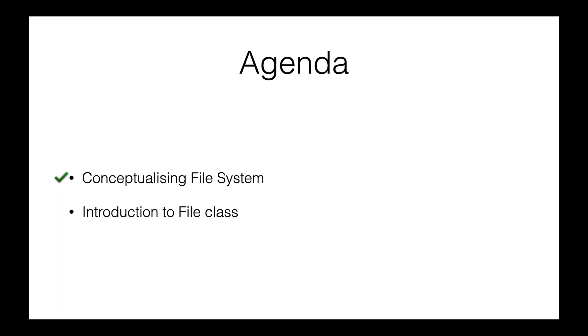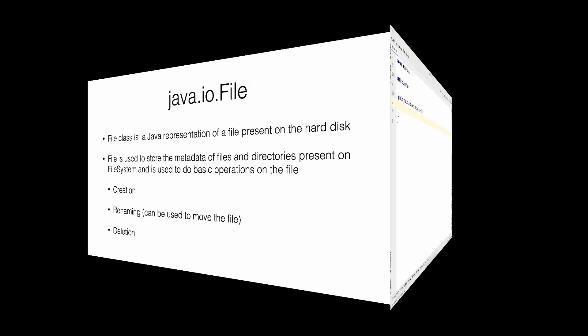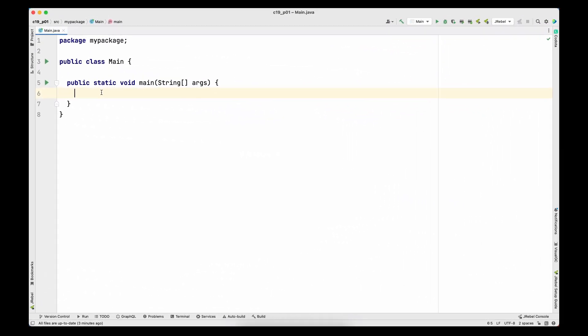Now let's have a look at the File class. The File class is used to represent an actual file on the hard disk — it's a Java representation of the actual file. We can use the File class for basic operations such as creating a file, renaming a file, deletion of a file, and the renaming operation can also be used to move a file from one location to another.